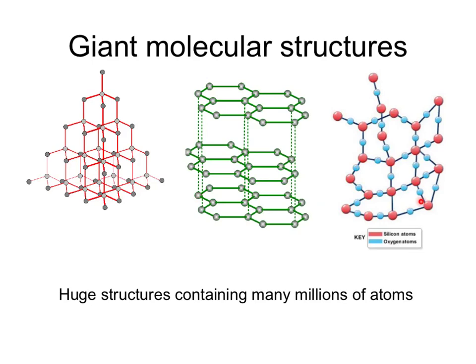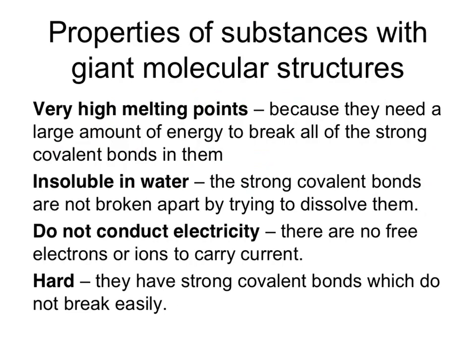Giant molecular structures all have huge structures containing many millions of atoms, held together by strong covalent bonds. They tend to have very high melting points because a large amount of energy is needed to break the very many strong covalent bonds. They tend to be insoluble in water, don't conduct electricity - though graphite is an exception due to its free delocalized electrons - and they tend to be hard because of the strong covalent bonds holding atoms together.